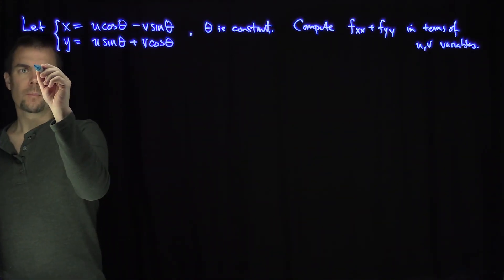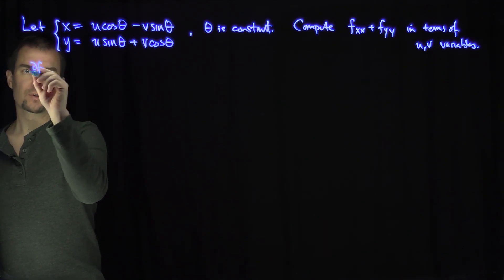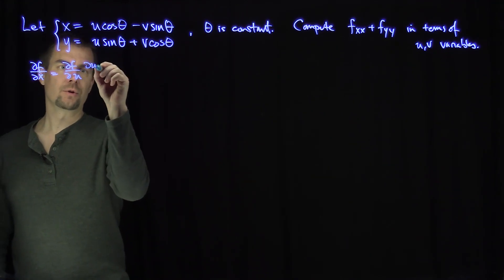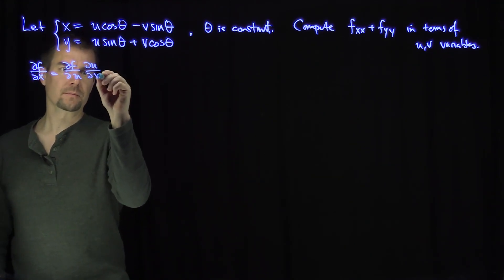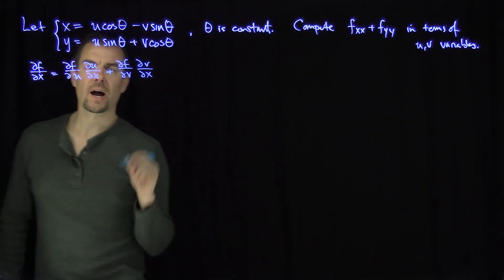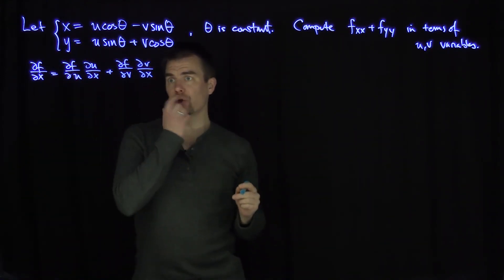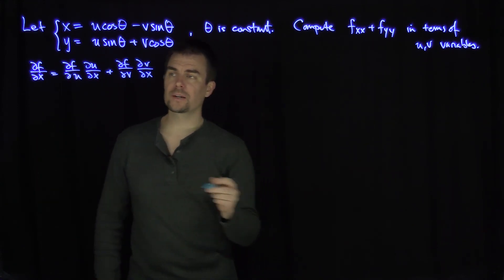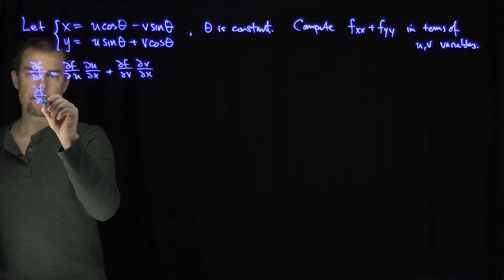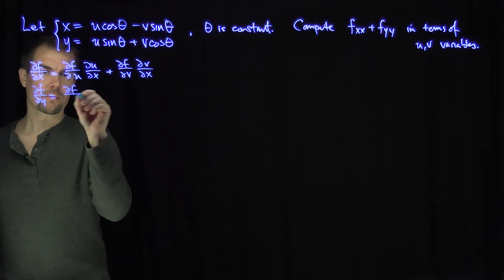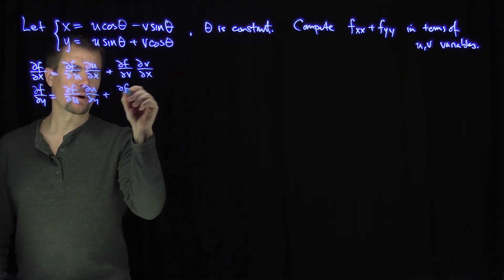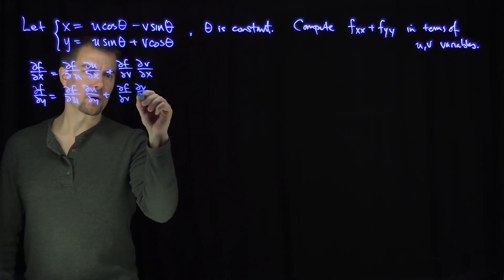By the chain rule, ∂f/∂x = (∂f/∂u)(∂u/∂x) + (∂f/∂v)(∂v/∂x). Likewise, ∂f/∂y = (∂f/∂u)(∂u/∂y) + (∂f/∂v)(∂v/∂y). We need to find ∂u/∂x, ∂v/∂x, ∂u/∂y, and ∂v/∂y.